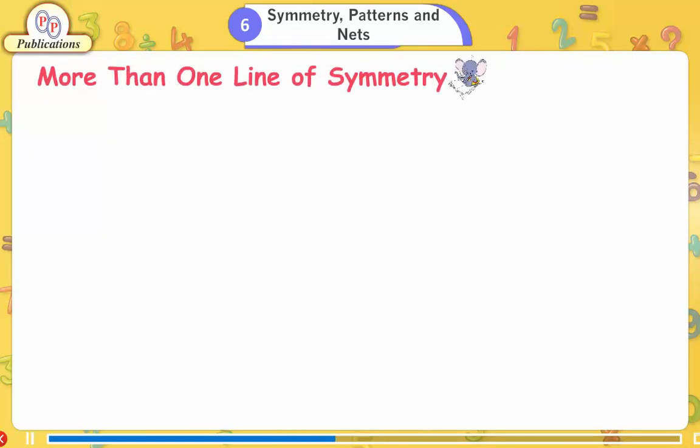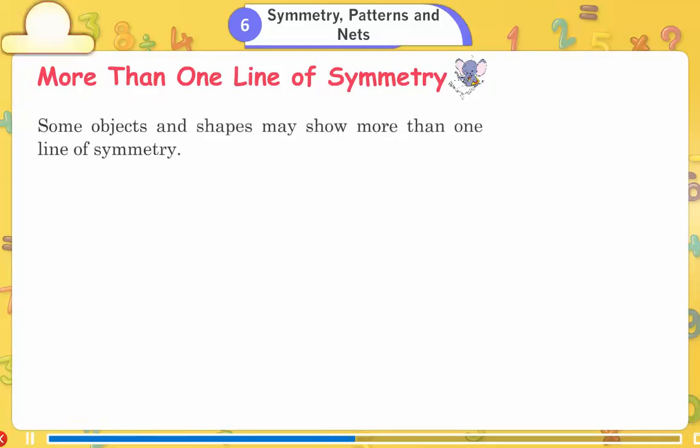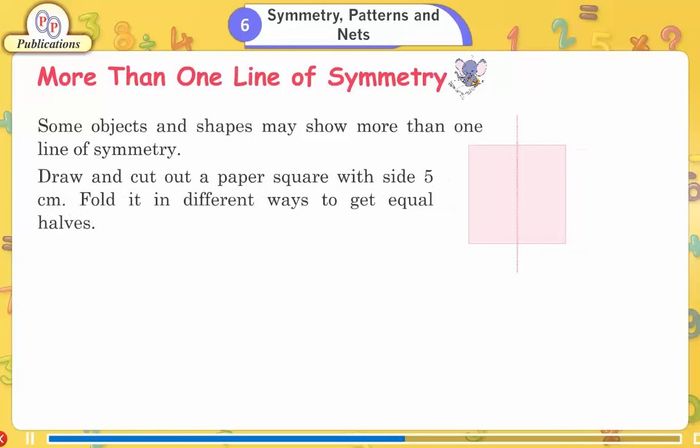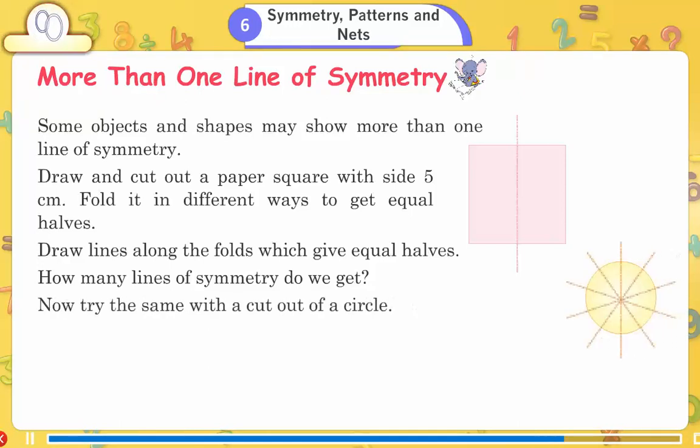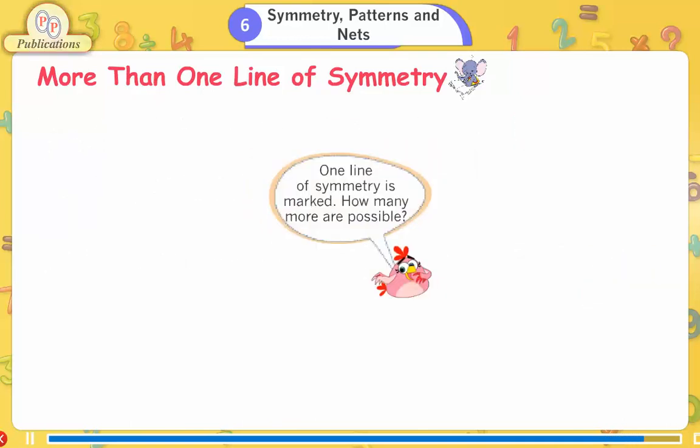More than one line of symmetry. Some objects and shapes may show more than one line of symmetry. Draw and cut out a paper square with side 5 cm. Fold it in different ways to get equal halves. Draw lines along the folds which give equal halves. How many lines of symmetry do we get? Now try the same with a cut out of a circle. How many lines of symmetry do you think are possible? One line of symmetry is marked. How many more are possible?